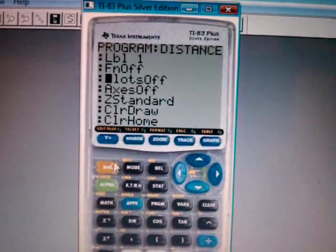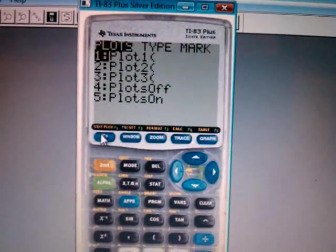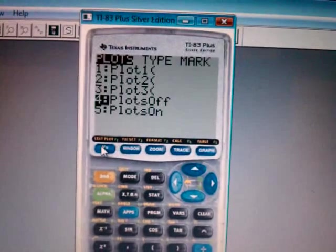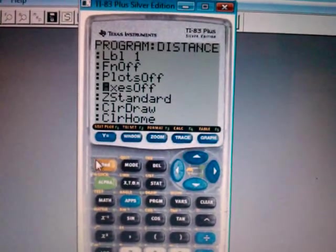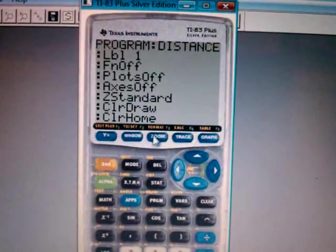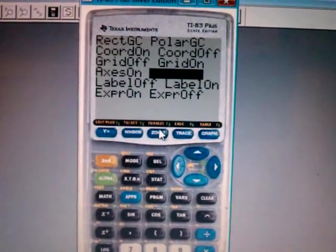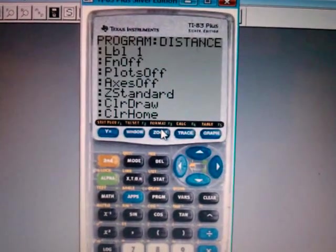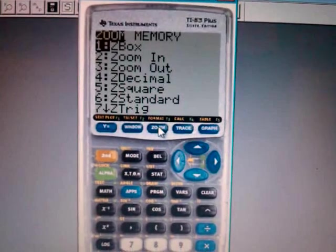Plots off—you hit second Y equals, then you go down to Plots off, number 4, hit enter. Access off is second Zoom, and you go down here and there's Access off, and enter. Z standard is just Zoom 6, so Zoom number 6.